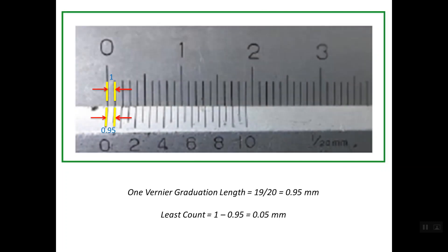This is the concept of the least count for the Vernier caliper with 0.05 mm resolution. Thanks a lot for watching.